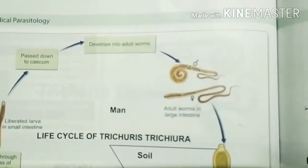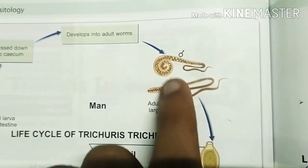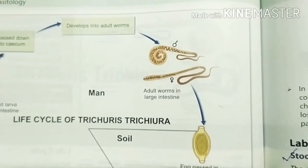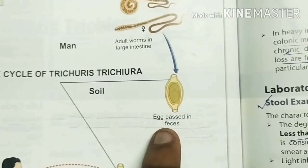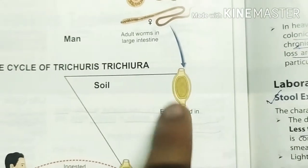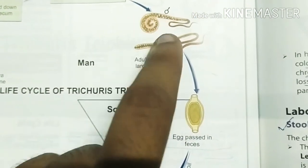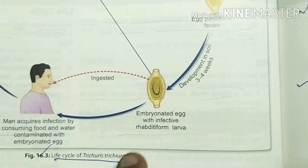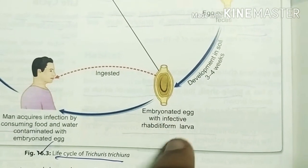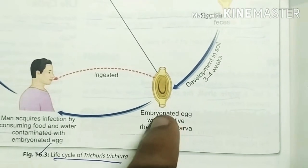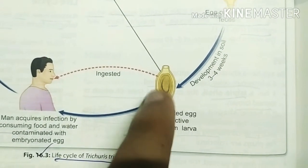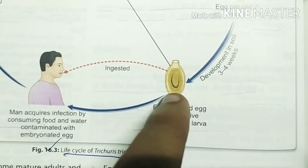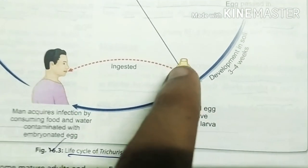This larva has been turning into adult worm. The egg is passed into the feces. These adult worms — male and female — will produce eggs and these eggs will pass into the feces. So again, the embryonated egg with infective rhabditae form larva — remember this, rhabditae form larva — is the infective form.